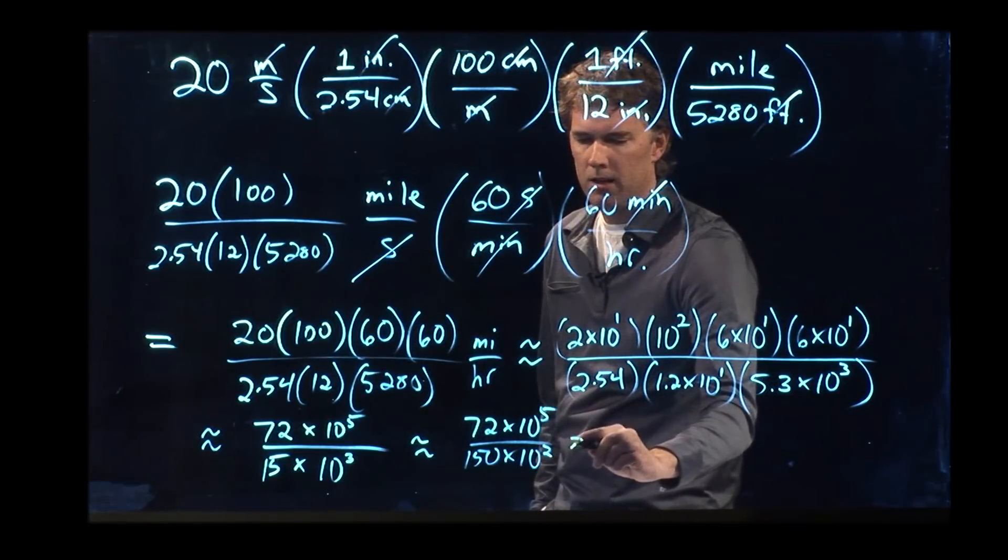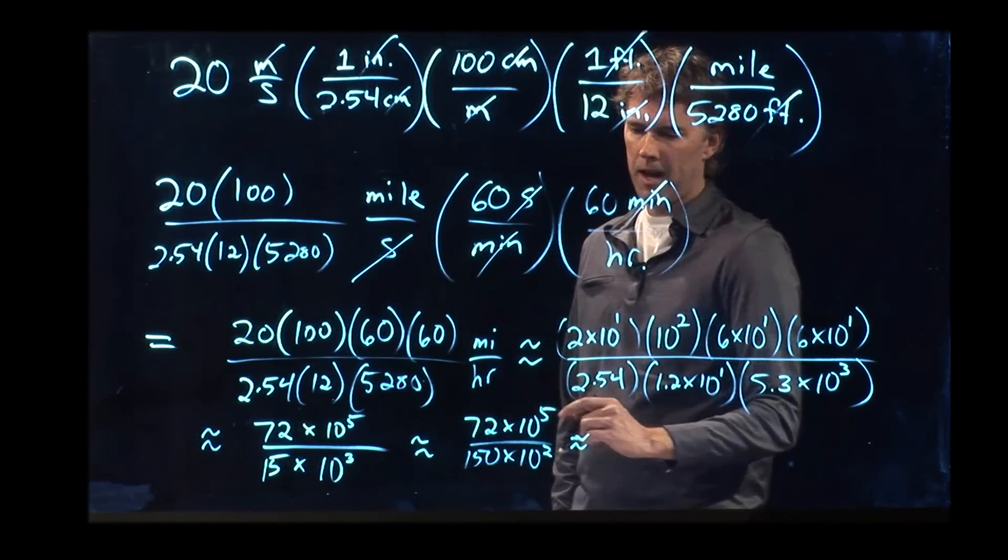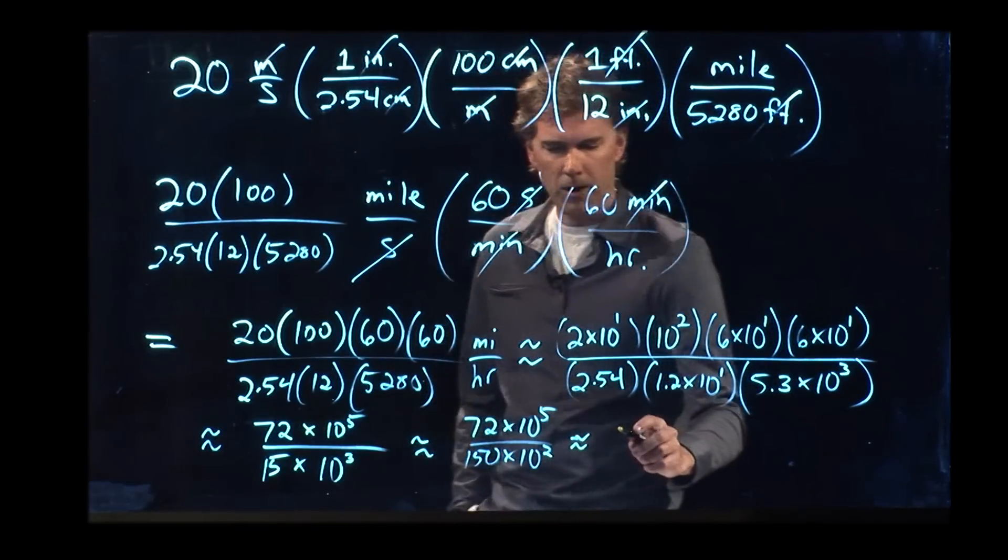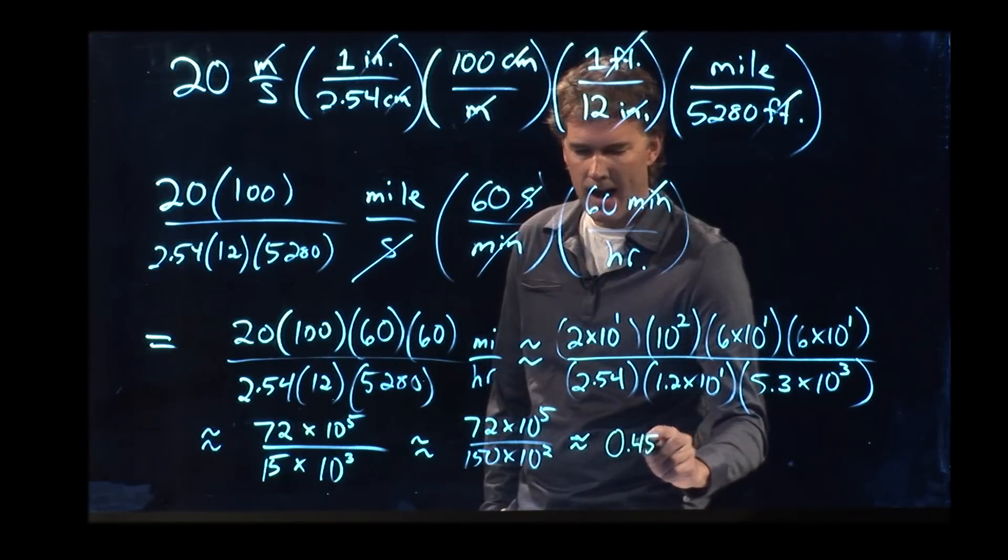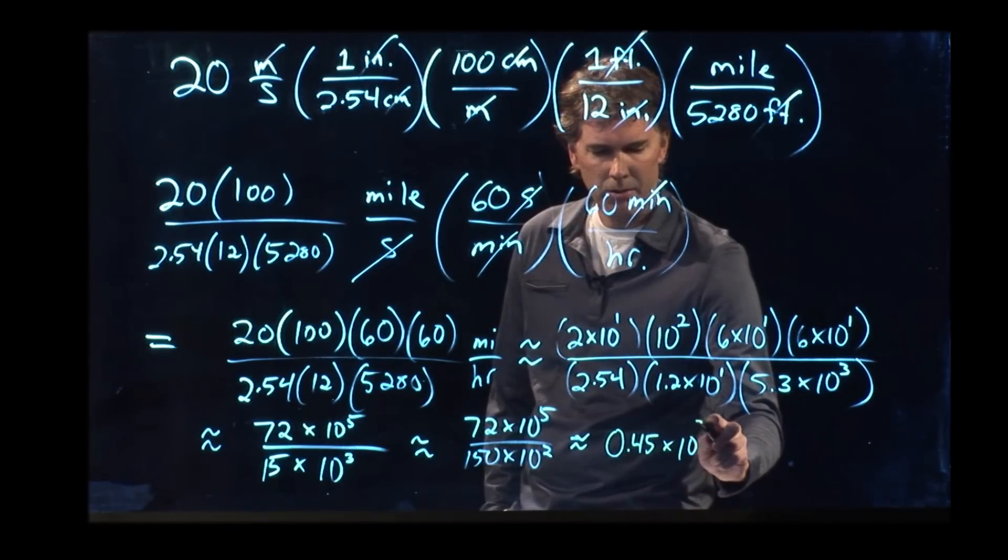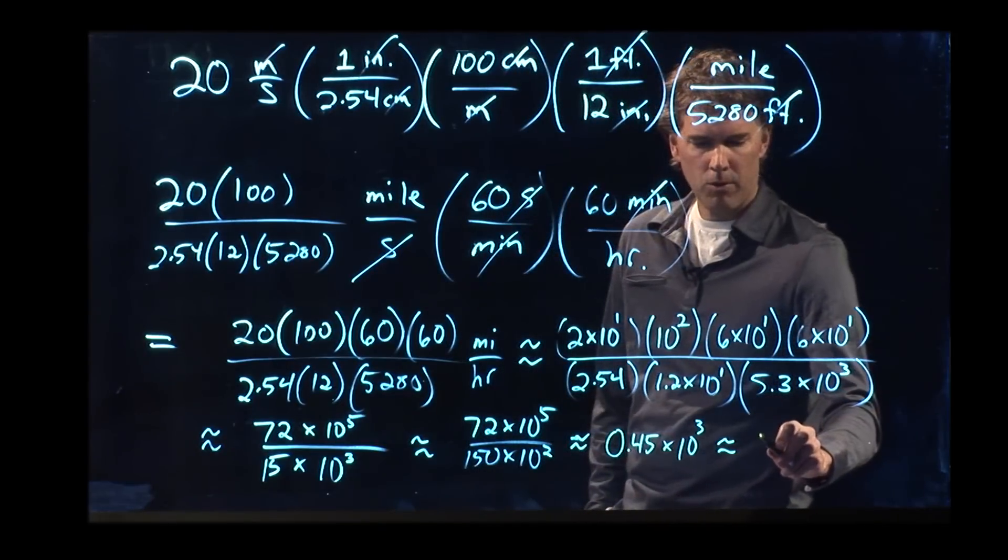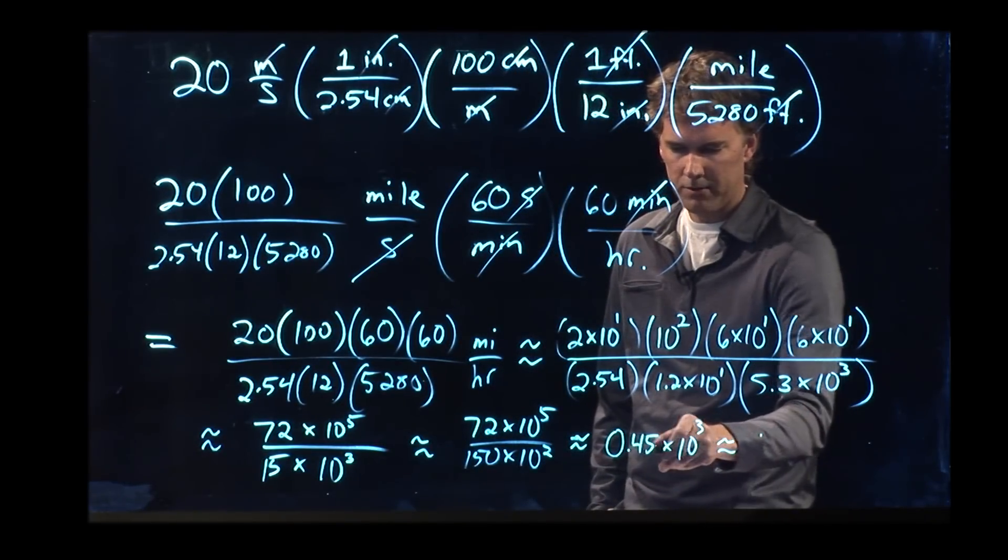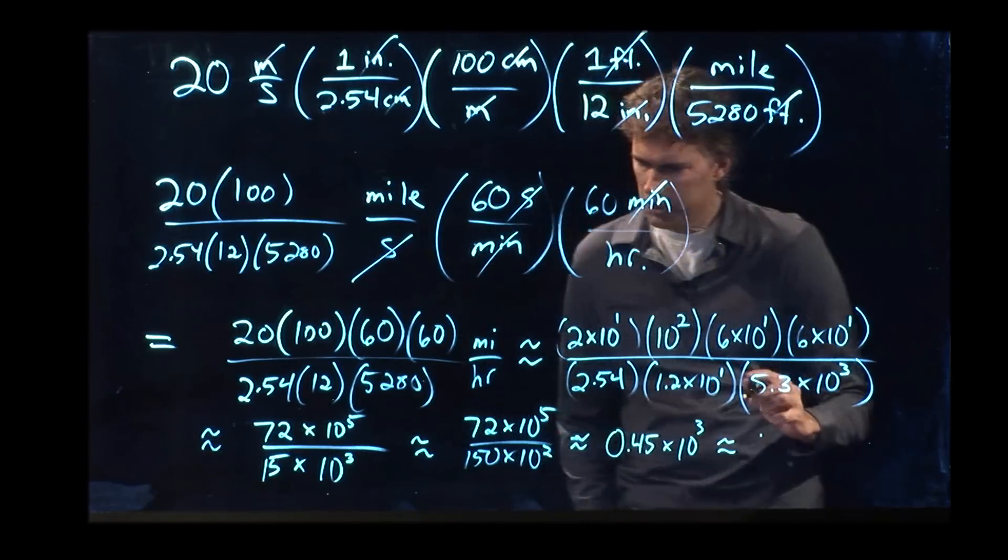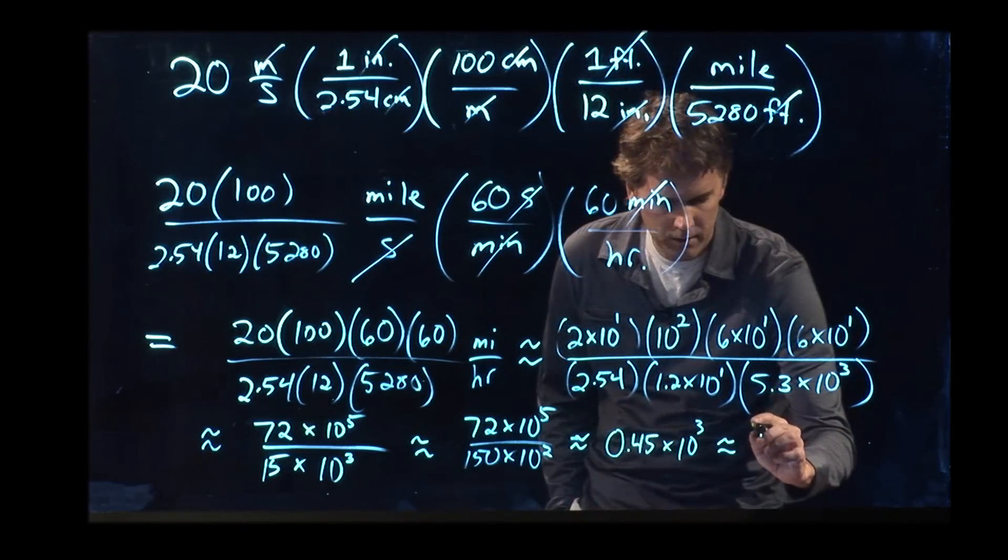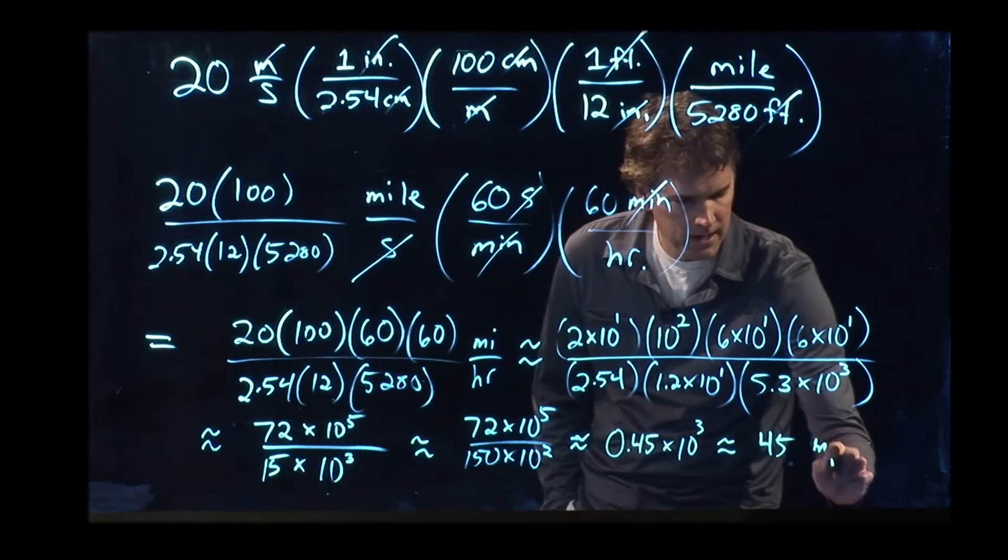And that is approximately what? Well, that's a little bit less than a half. Right? So let's say it is around 0.45. And then we have 10 to the 3. And that is 4. We move it over 3 spots. So we've got 1, 2, 3. And we should end up with around 45 miles per hour.